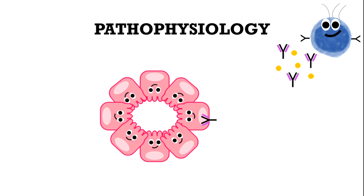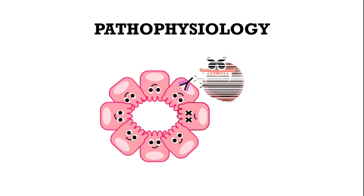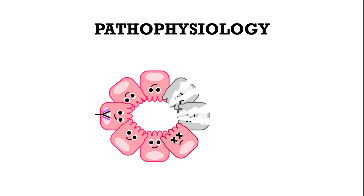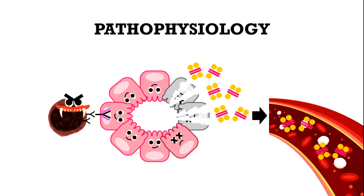The attacked follicular cells and the cytokines from CD4-positive T-helper cells attract CD8-positive cytotoxic T-cells as well as natural killer cells, which start destroying them. As the first cells are destroyed, T3 and T4 are spilled into the bloodstream, causing transient hyperthyroidism, also called hashytoxicosis.